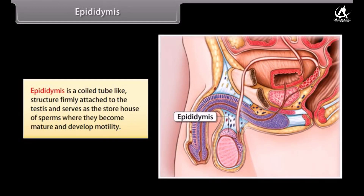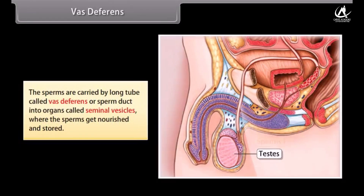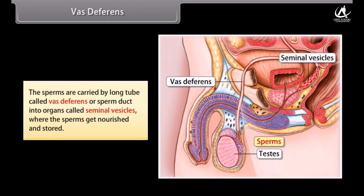The epididymis is a coiled tube-like structure firmly attached to the testes, serving as the storehouse of sperms where they become mature and develop motility. The sperms are then carried by a long tube called vas deferens or sperm duct into organs called seminal vesicles, where the sperms get nourished and stored.